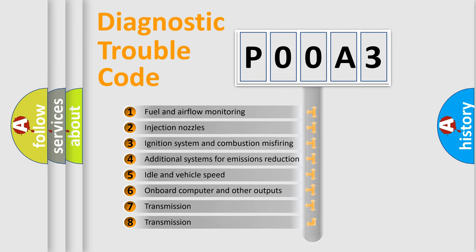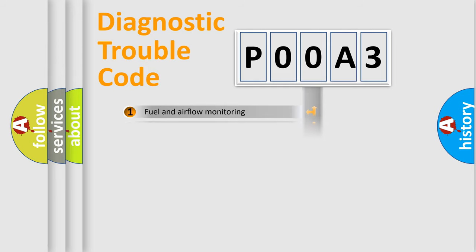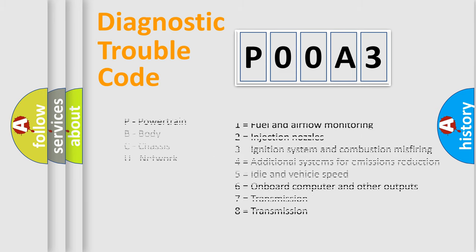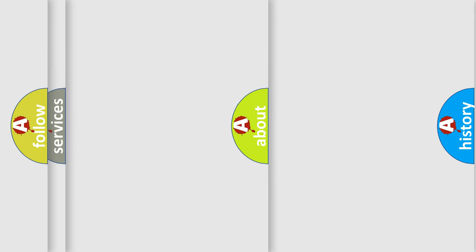The third character specifies a subset of errors. The distribution shown is valid only for the standardized DTC code. Only the last two characters define the specific fault of the group. Let's not forget that such a division is valid only if the second character code is expressed by the number zero.